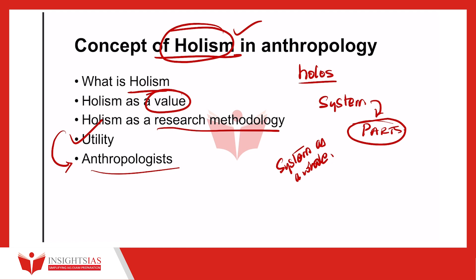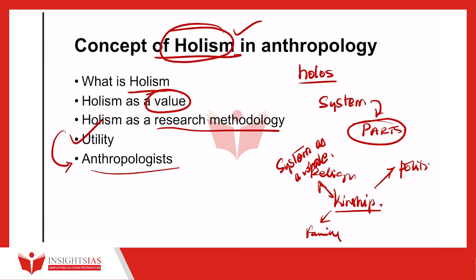In practical terms, Holism also refers to a kind of multifaceted approach to the study of culture. In other words, all constituent parts of a society must be seen as interacting with and influencing all others. So if you want to study kinship, for example, in anthropology, kinship cannot be studied in isolation. It has to be studied with other aspects of society — whether it is political system, religion, family, or environment. Kinship system varies as per the environment.